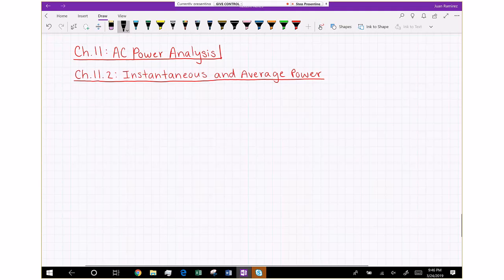So obviously at any instant in time, voltage and current will be different and therefore power will be different. So that's where we get instantaneous power from. And obviously we care for average power over a period. But then there's also different types of power.